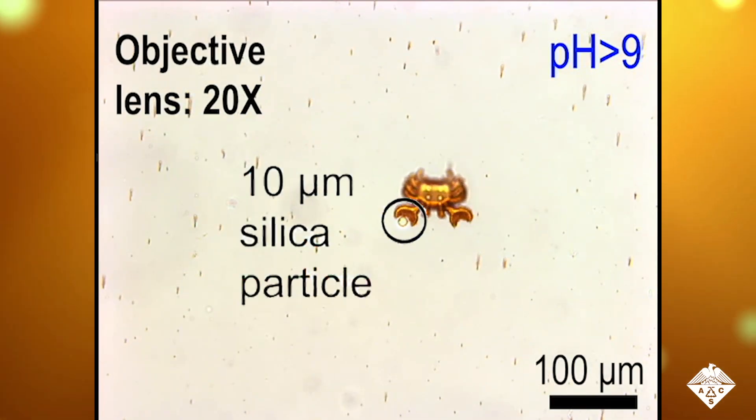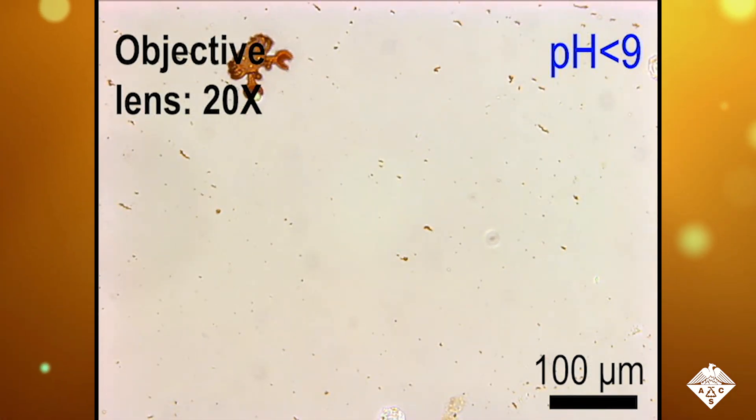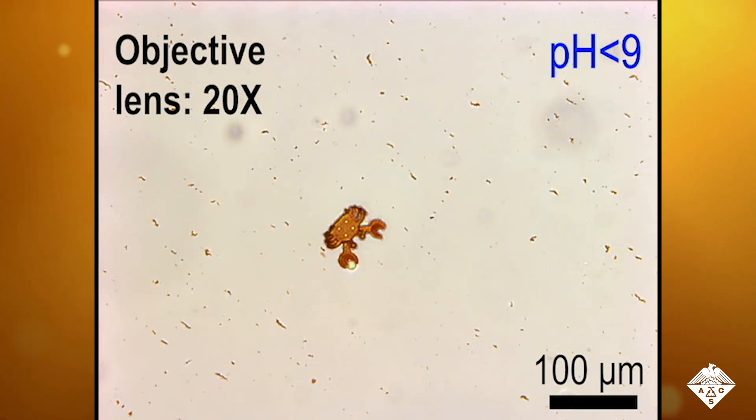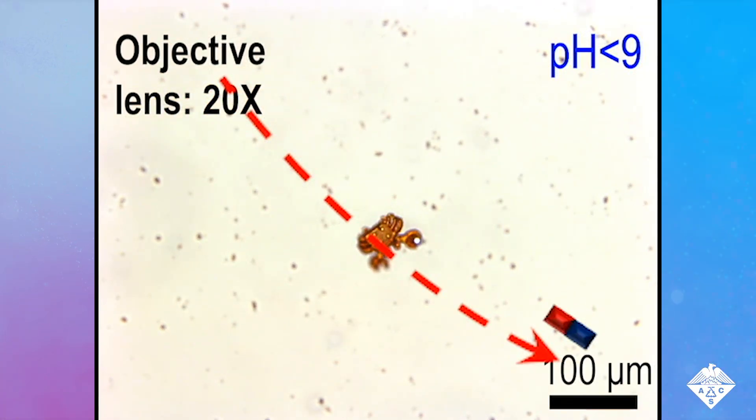The researchers used magnets and pH changes to make the micro-robots perform different tasks. For example, the crab gripped a micro-particle, transported it, and released it.